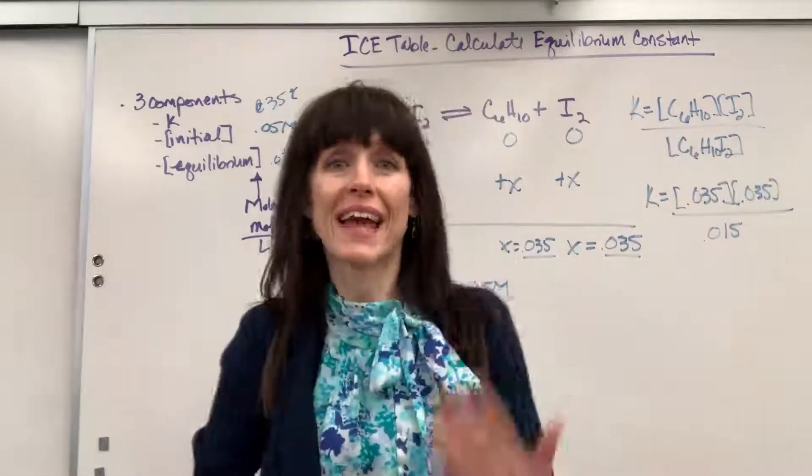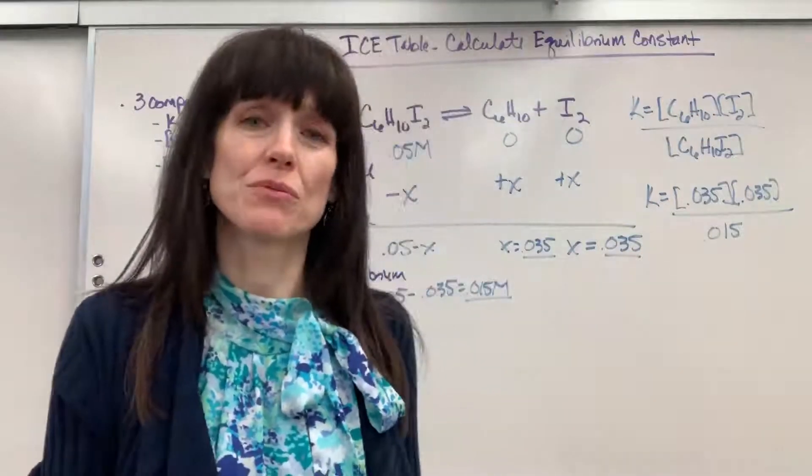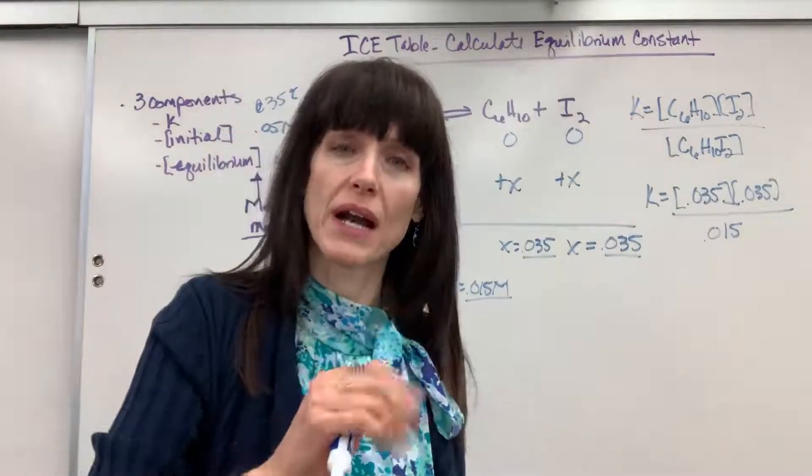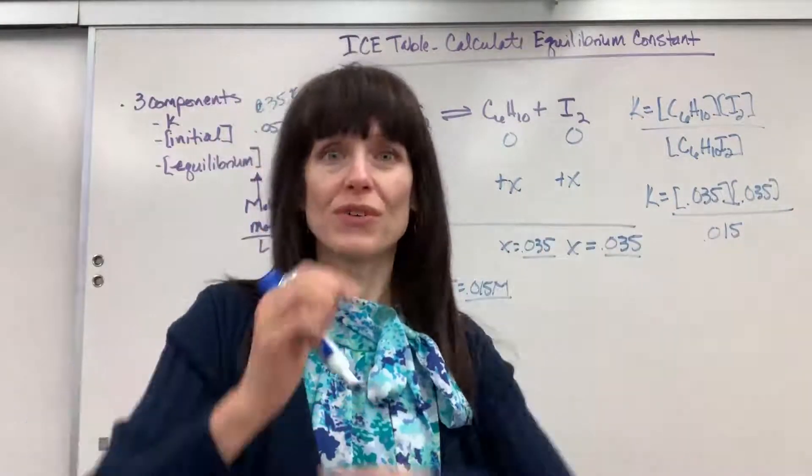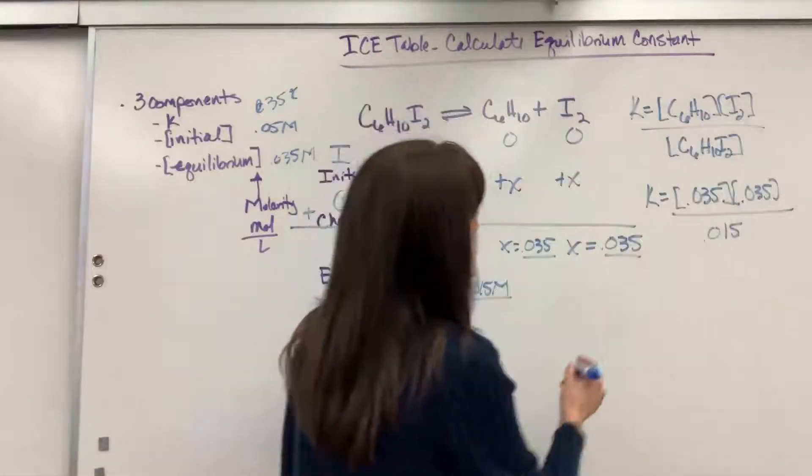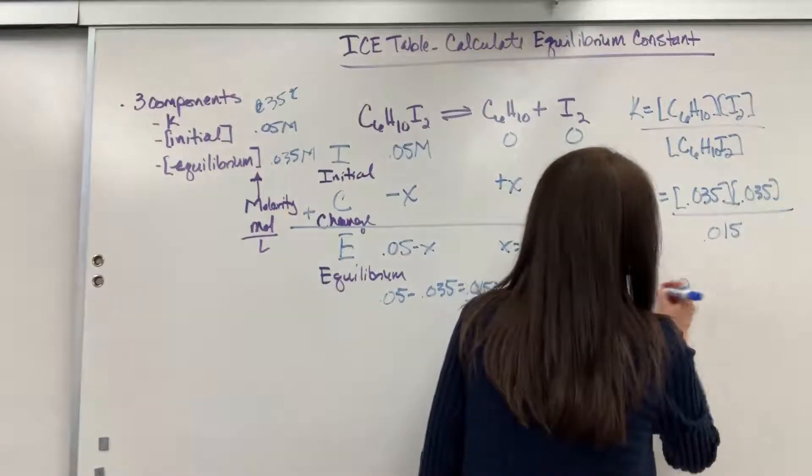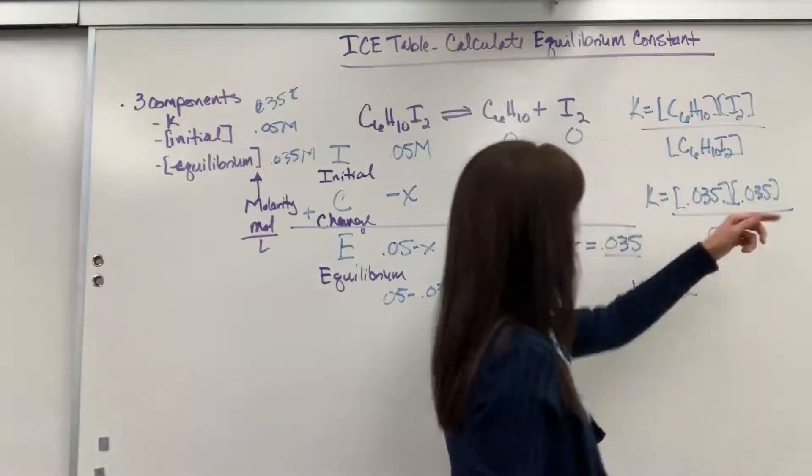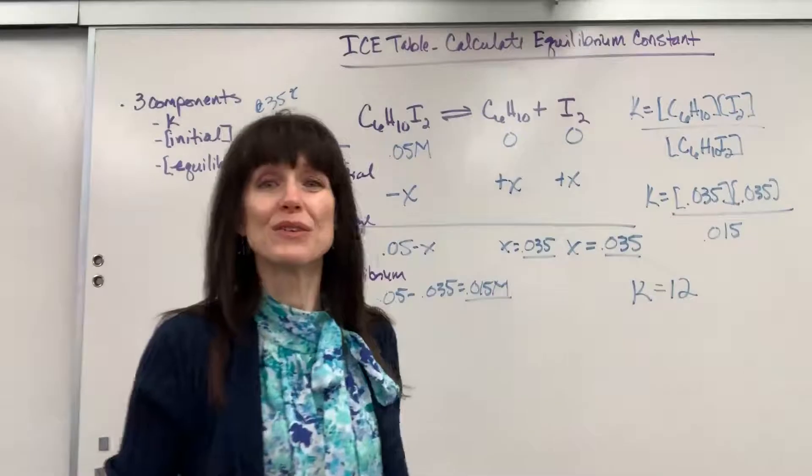Now just a reminder, K is unitless. It just shows us the ratio of products compared to reactants when we're at that beautiful equilibrium. So plug that into our calculator and we get 12. I'm just rounding that at 12 since I had two sig figs on each of those. So K equals 12.